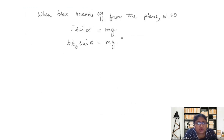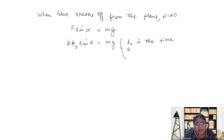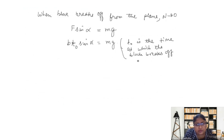Let's say at time t0, substituting F equals bt0, we get t0 sin alpha equals mg divided by b. So t0 is the time at which the block breaks off from the surface.